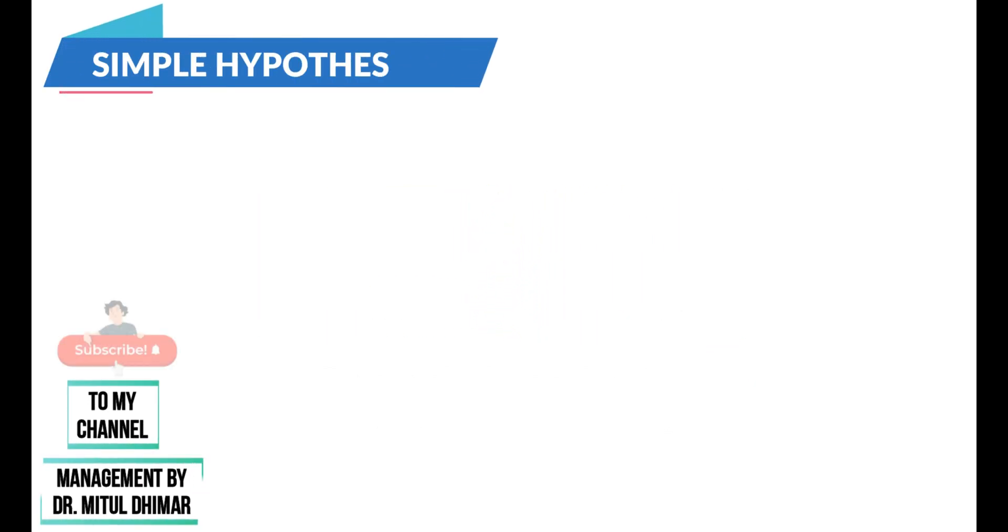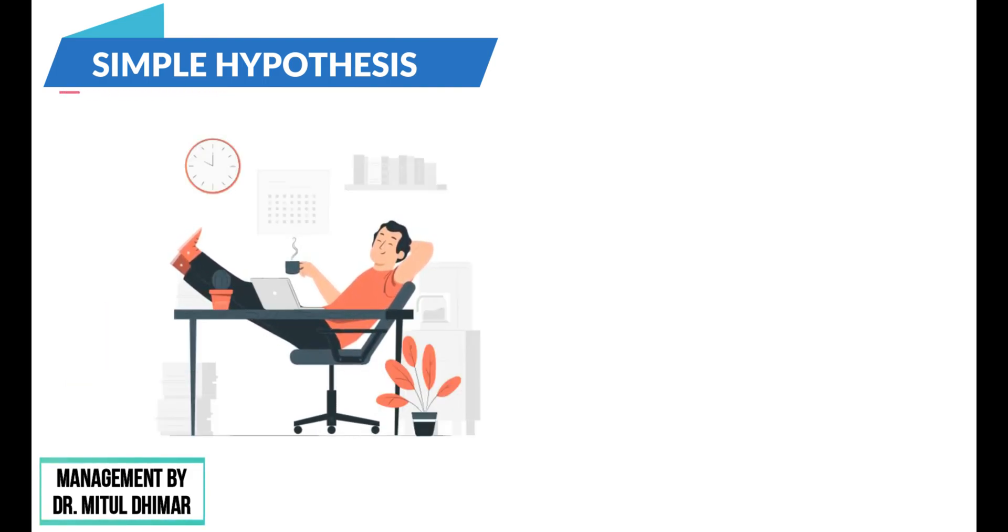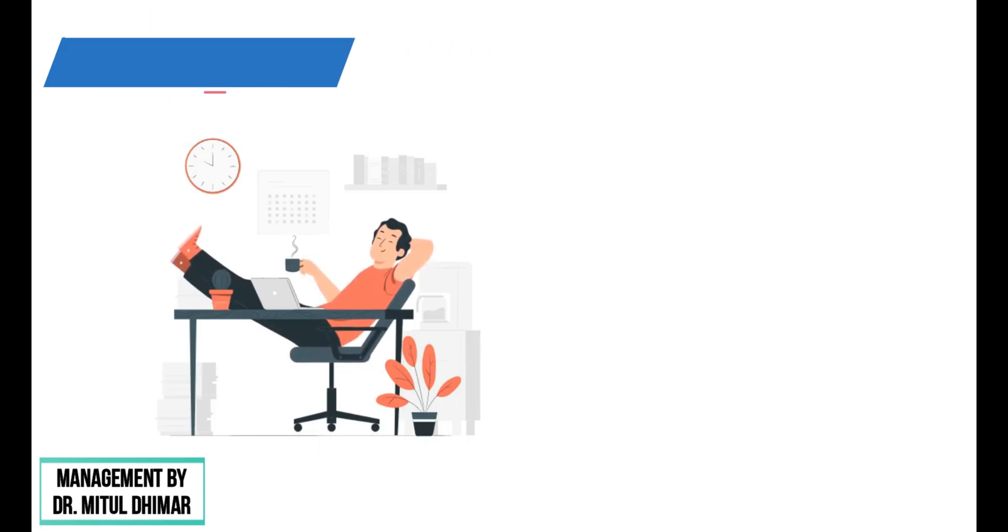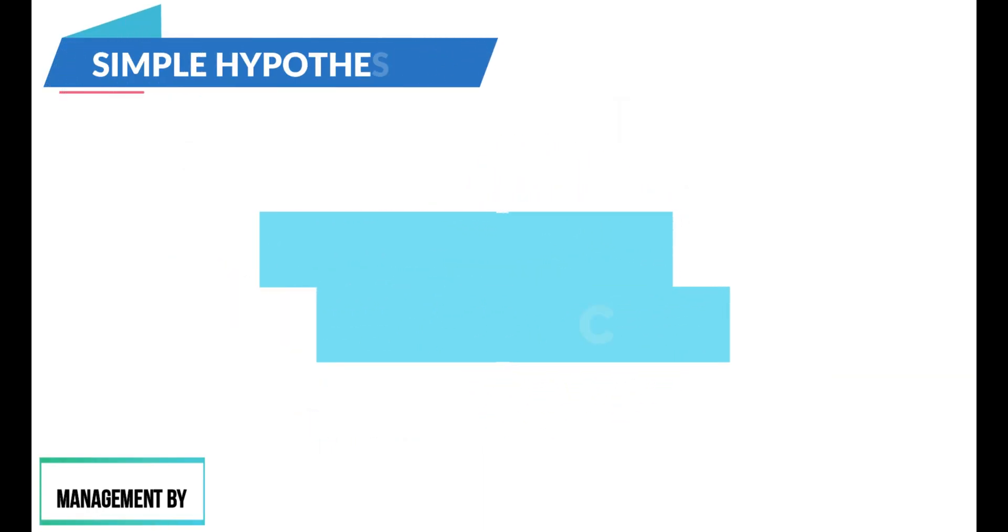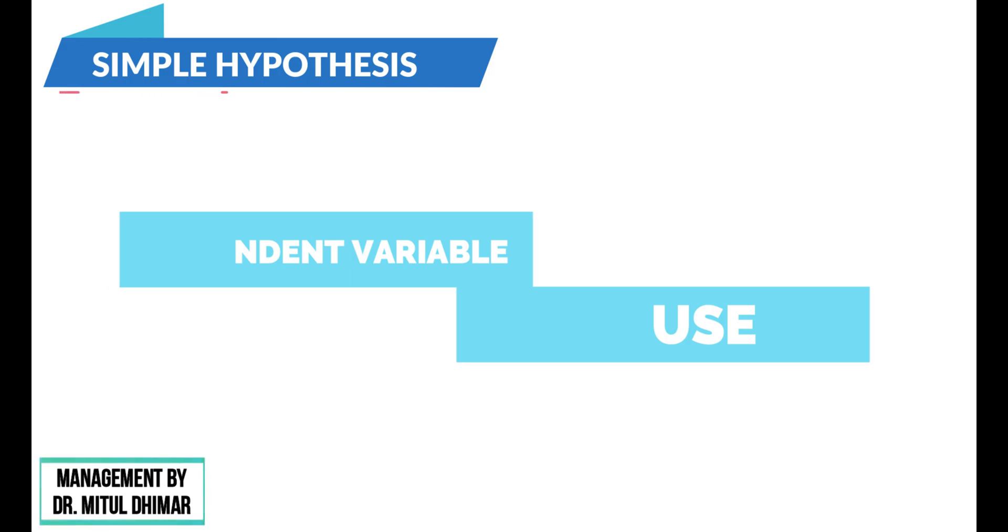Number one, simple hypothesis. A simple hypothesis is also called a basic hypothesis. It is defined as the relationship between two variables, an independent variable otherwise known as cause and a dependent variable otherwise known as effect.